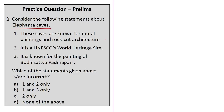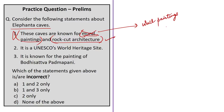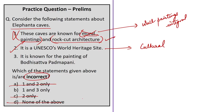A practice question on Elephanta Caves: Statement one says the caves are known for mural paintings and rock-cut architecture — this is wrong, as they are known only for rock-cut architecture, not mural paintings. Statement two says it is a UNESCO World Heritage Site — this is correct, listed under the cultural category. Since statement one is incorrect and the question asks for the incorrect statement, option B (one and three) is correct. Statement three is also incorrect because the painting of Bodhisattva Padmapani is at Ajanta Caves, not Elephanta — and Bodhisattva Padmapani was asked in the 2017 UPSC prelims.